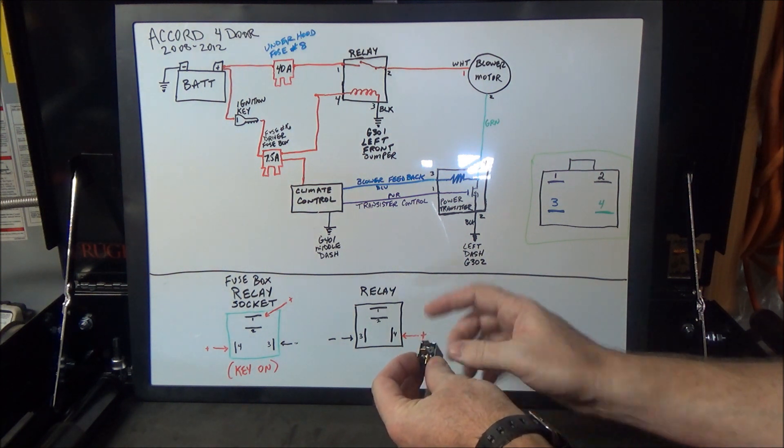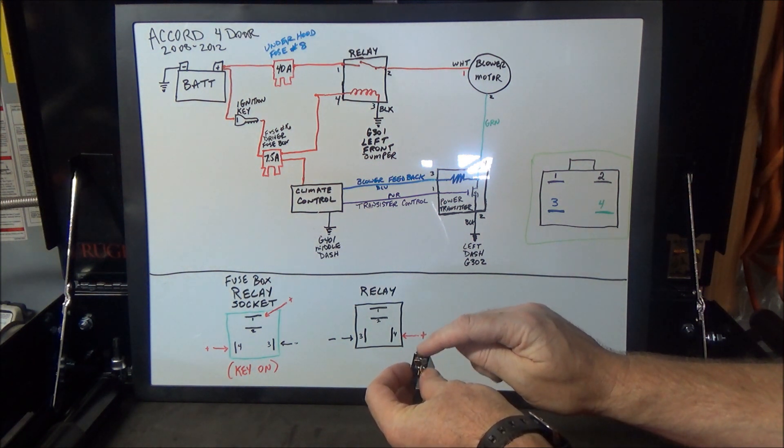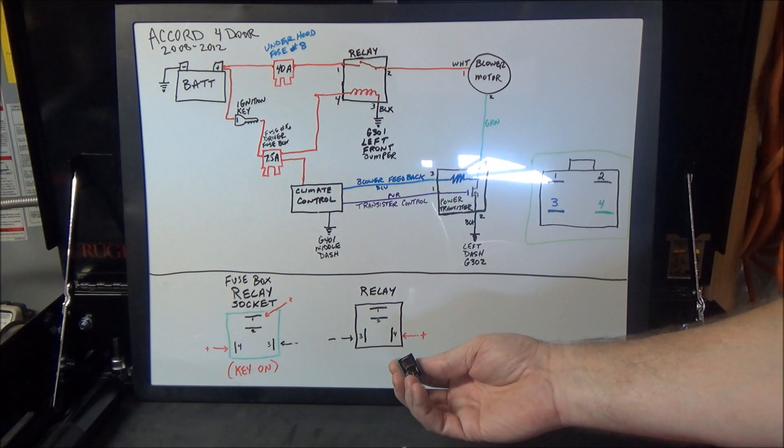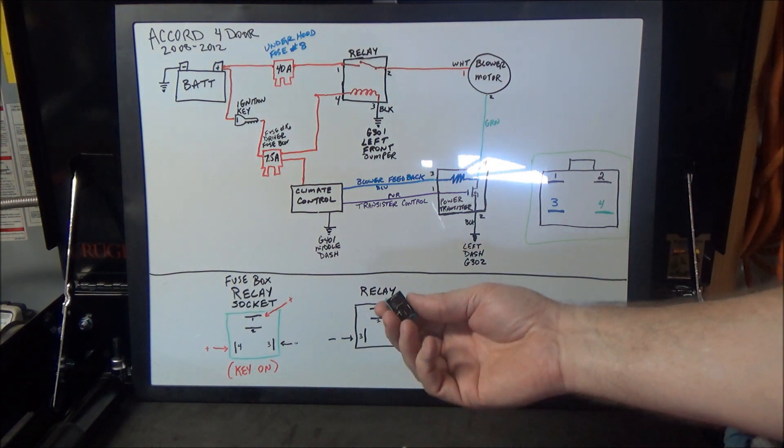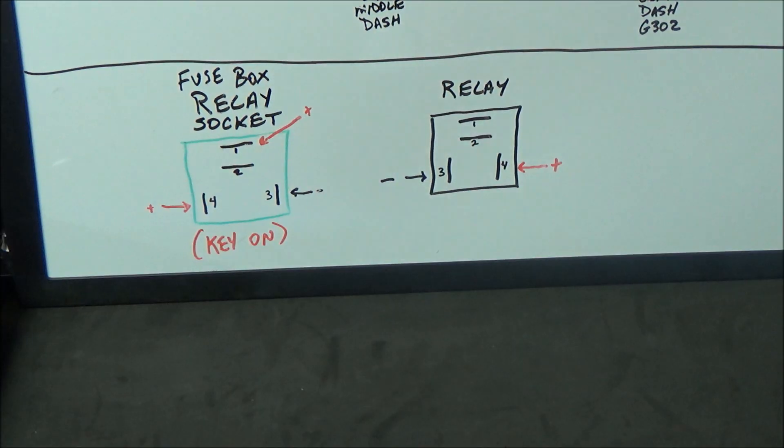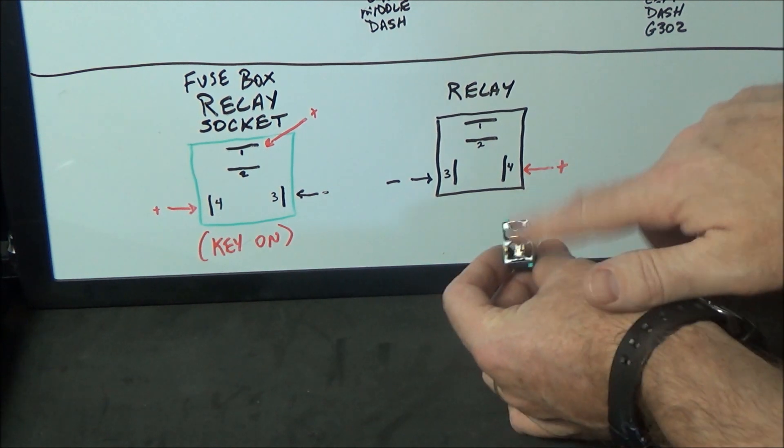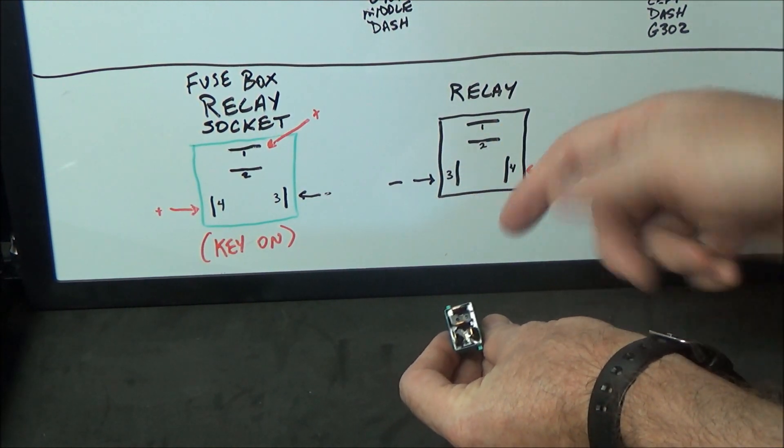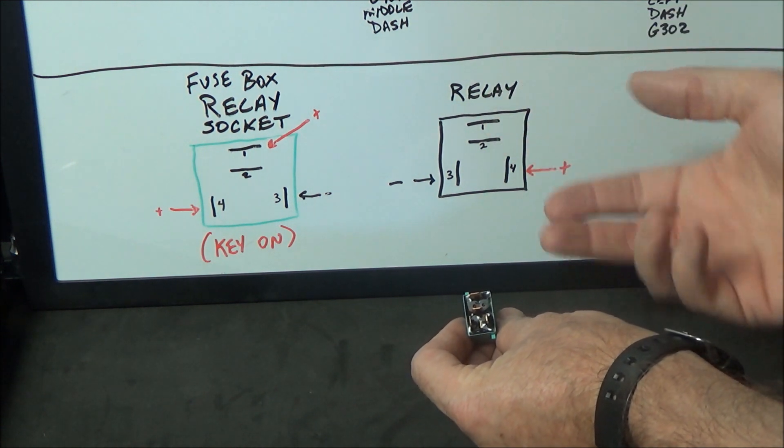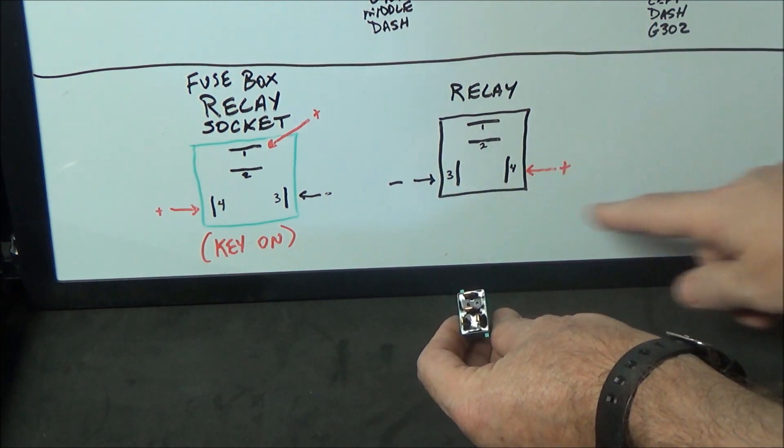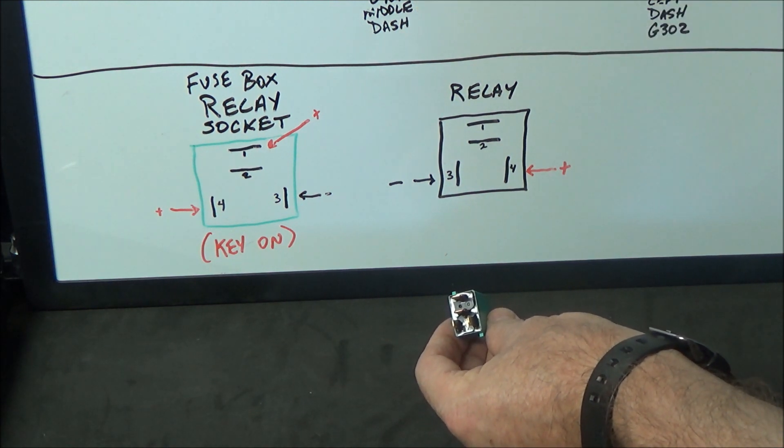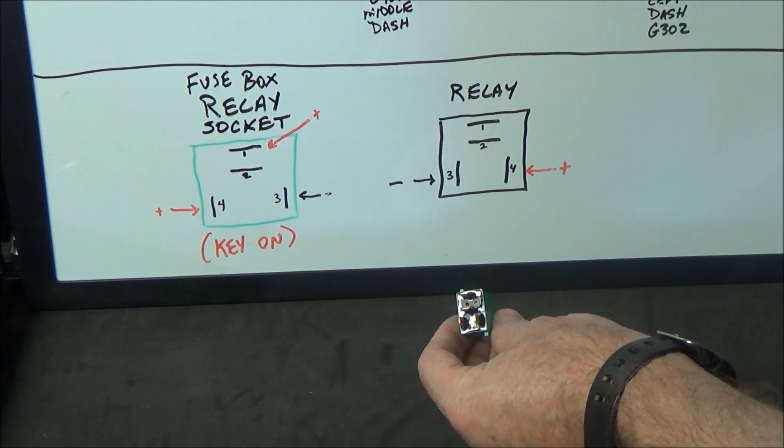Then once we do that, we'll put our voltmeter on terminals one and two, and we should have continuity. If we do and we hear a click, then we know this relay is good. If we have no continuity and we don't hear a click, then the relay is bad. On some models when you're doing the testing, these pins three and four might be flopped, and these pins one and two might be flopped. You can just look at a diagram and see which side—you should be able to tell pretty quick which side goes to the small fuse and which side goes to the large fuse. That gives you a clue on which one is your control and which one is your load.